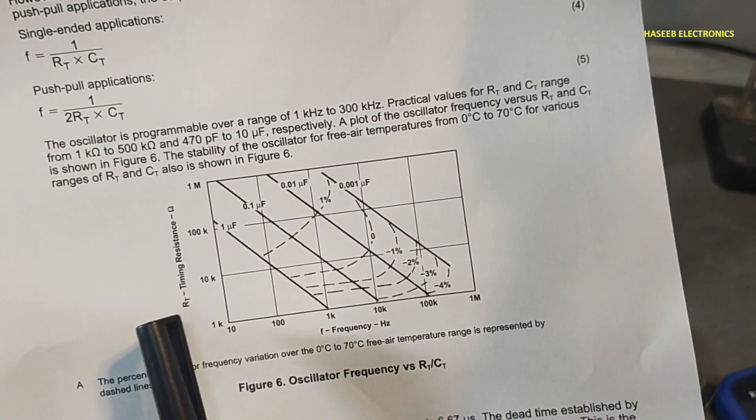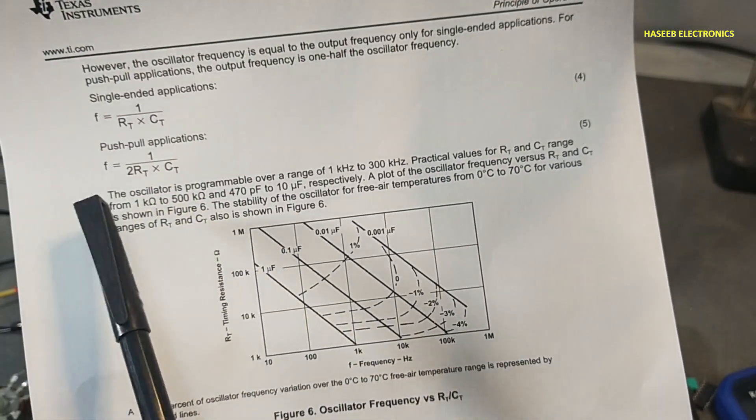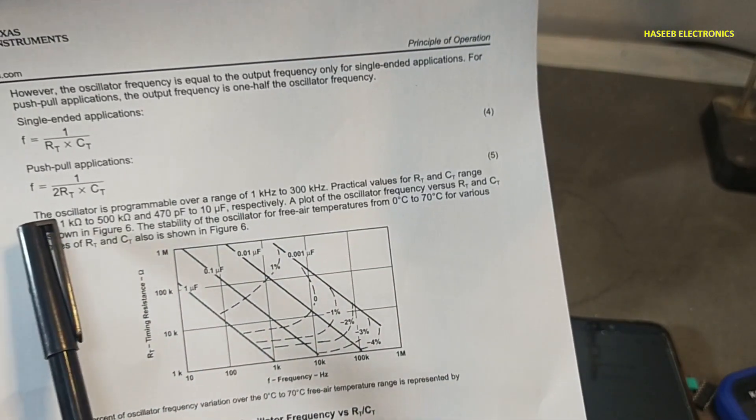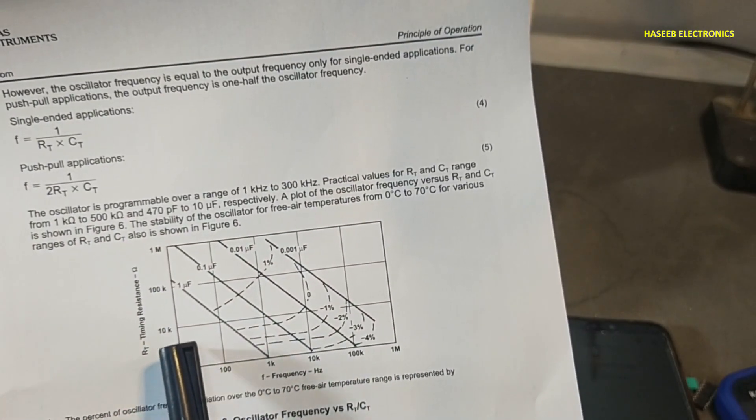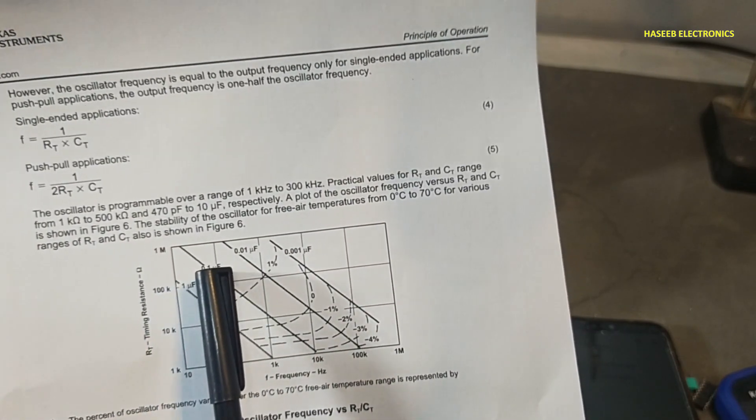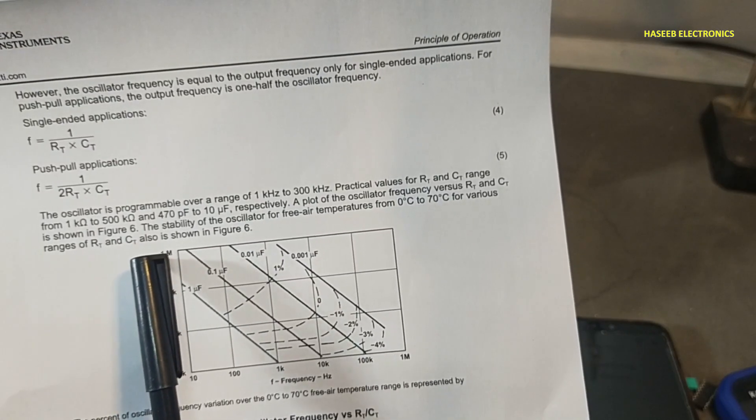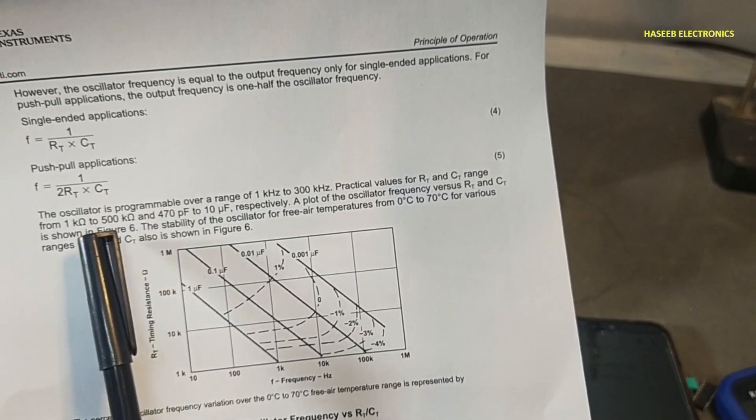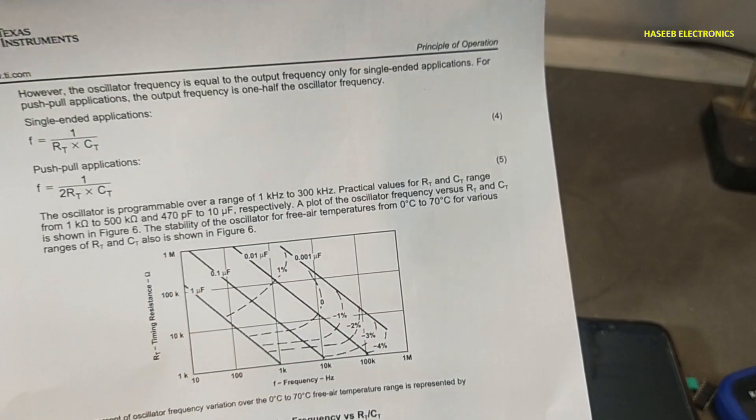Here is a guideline: practical value of rtct can be used 1 kilo ohm to 500 kilo ohms. So if we will use small capacitor, the resistor value will be very high. For that purpose we need to remain within limit: 470 pico to 10 microfarad capacitor can be used.